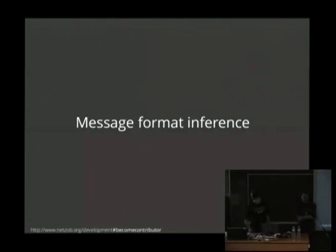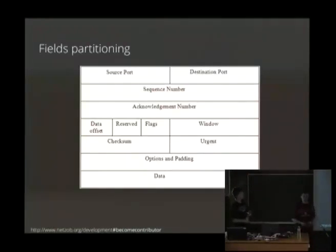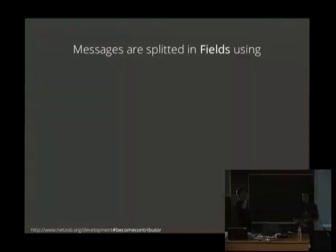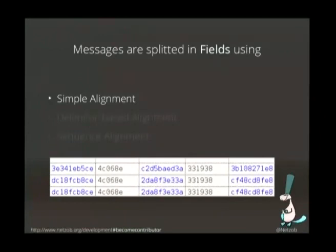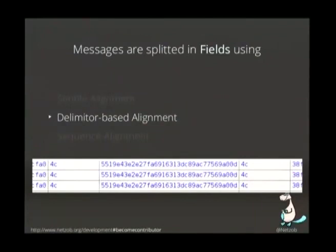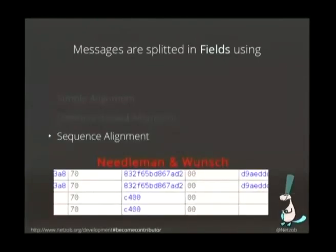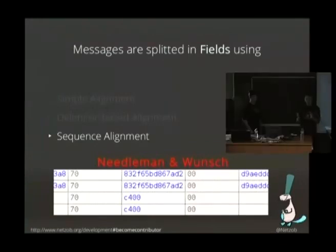The first step in reverse engineering communication protocols is to look at the message format. For example, the TCP header is split into different fields, and we want to retrieve those fields automatically. To do that we have three approaches: the first is basic alignment, separating static and dynamic bytes; the second is delimiter-based partitioning, useful for text protocols like HTTP headers; and the third, which is quite interesting, is sequence alignment, where you find the optimal alignment of static parts and can retrieve fields of dynamic length.